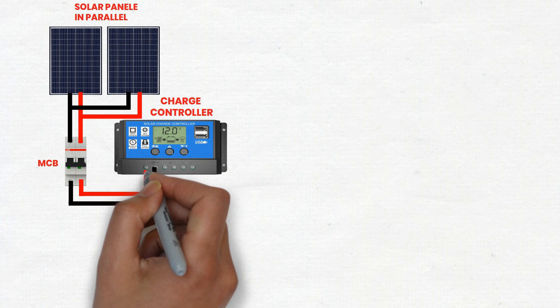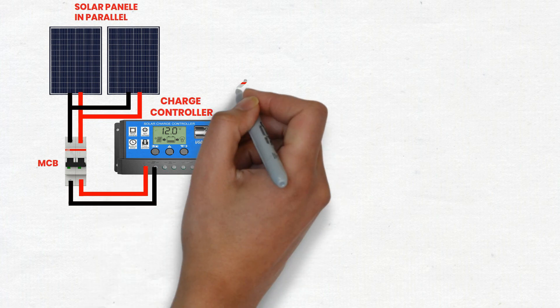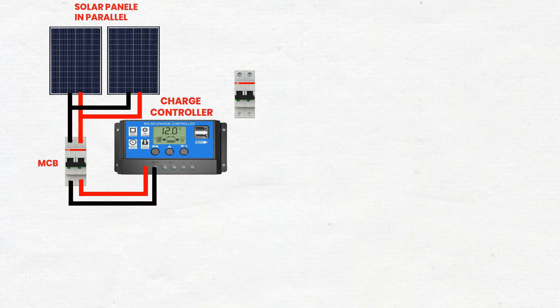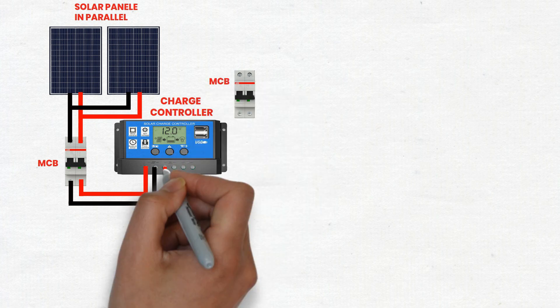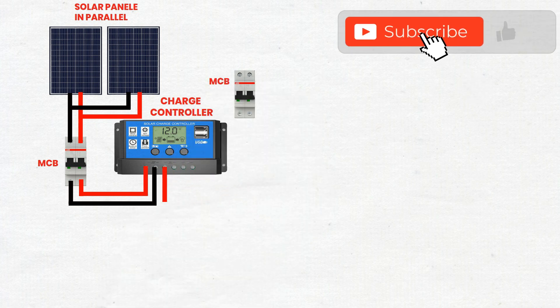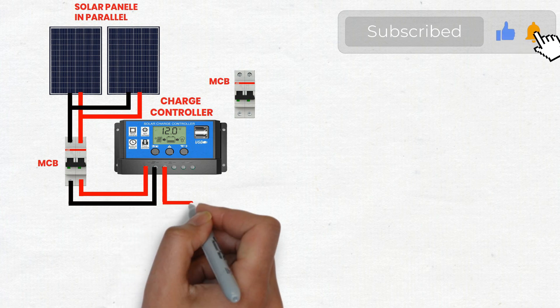Step 3: Connect solar charge regulator to second MCB. Use cables to connect the output terminals of the solar charge regulator to the input terminals of the second MCB. This provides an additional layer of protection.